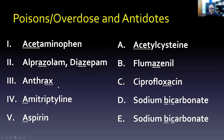For anthrax, ciprofloxacin is the antidote. Think of a mirror: 'axe' turns around to 'XA', so just think of X-ing out anthrax. Amitriptyline and aspirin have the same antidote — sodium bicarb. Both of them start with A, so A for amitriptyline goes with B and C for bicarb: ABC. And A in aspirin goes with B and C for bicarb: ABC again.